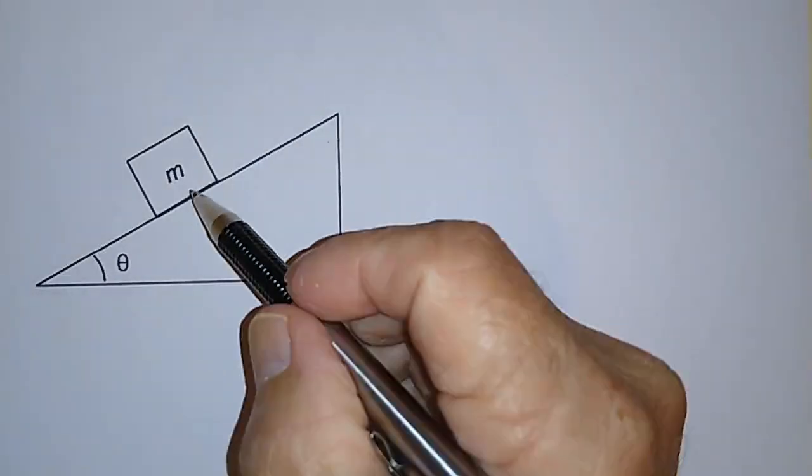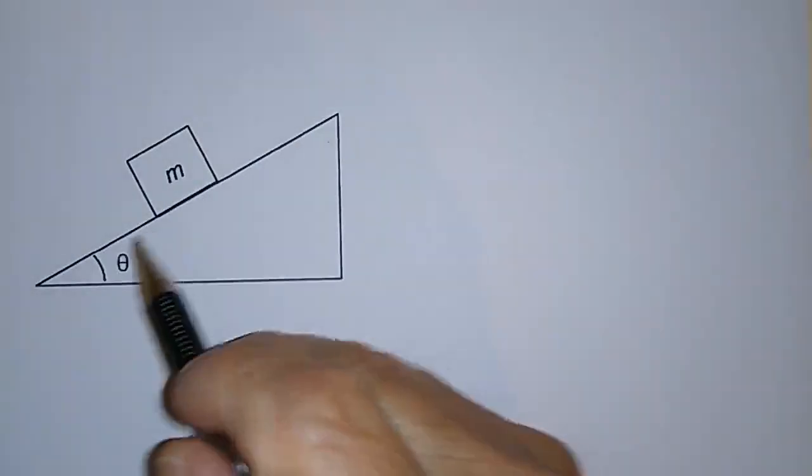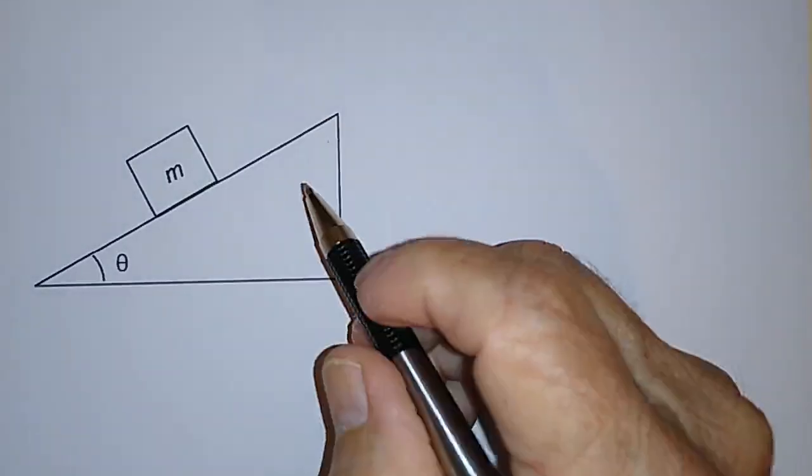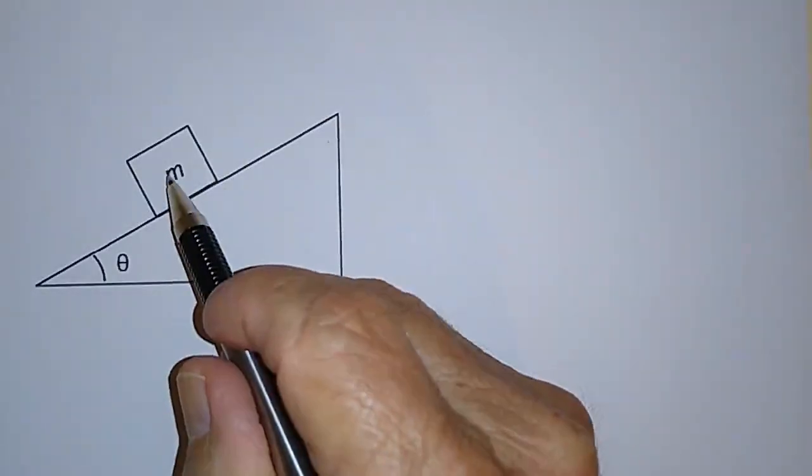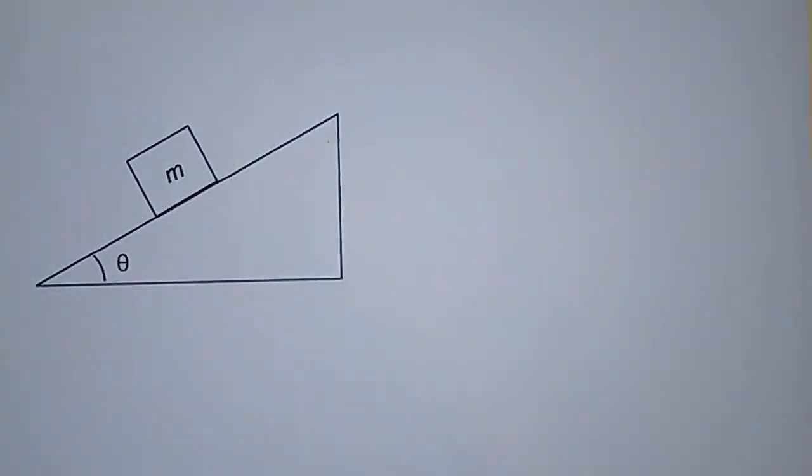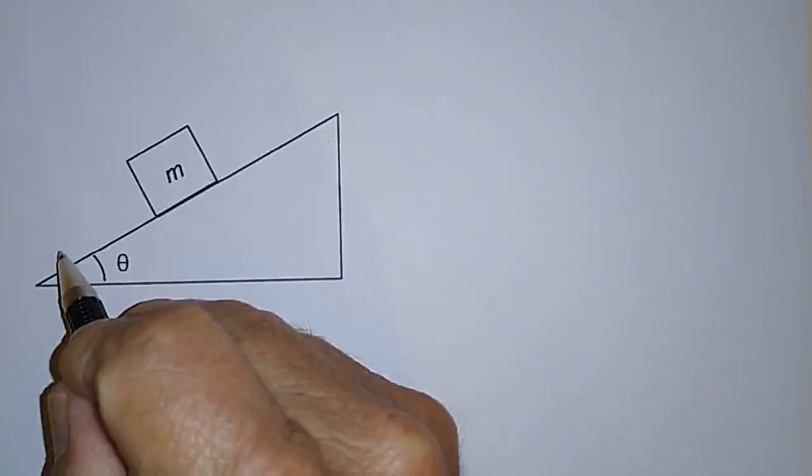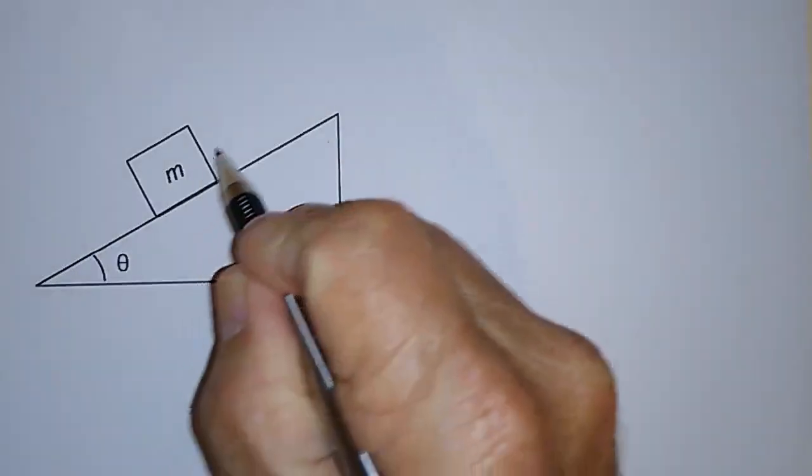Let's say we have a box of mass M sitting on an inclined plane or ramp, and let's say that there's friction between the box and the ramp, and we want to push this box up the ramp with a force that we exert parallel to the ramp.